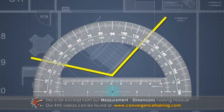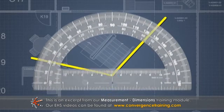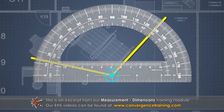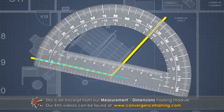The protractor's center point is placed on the angle's vertex and then rotated so that the baseline is lined up with one ray of the angle.